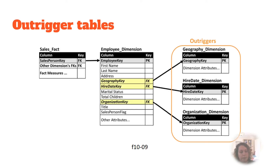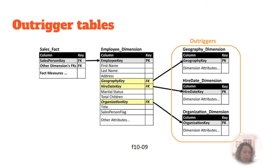The classic star schema has facts linked to dimensions without any relationship between the dimensions. However, it is very common that there are several dimensions that link with other dimensions. Outtriggers are another way to deal with that, apart from bridge tables and moving from a star to a snowflake schema. Outtriggers are used when a dimension is referenced within another dimension.